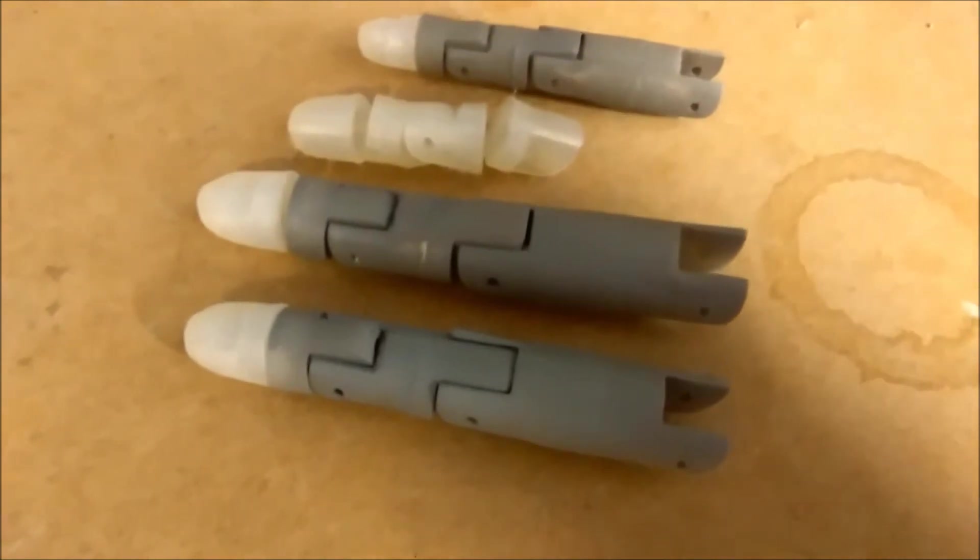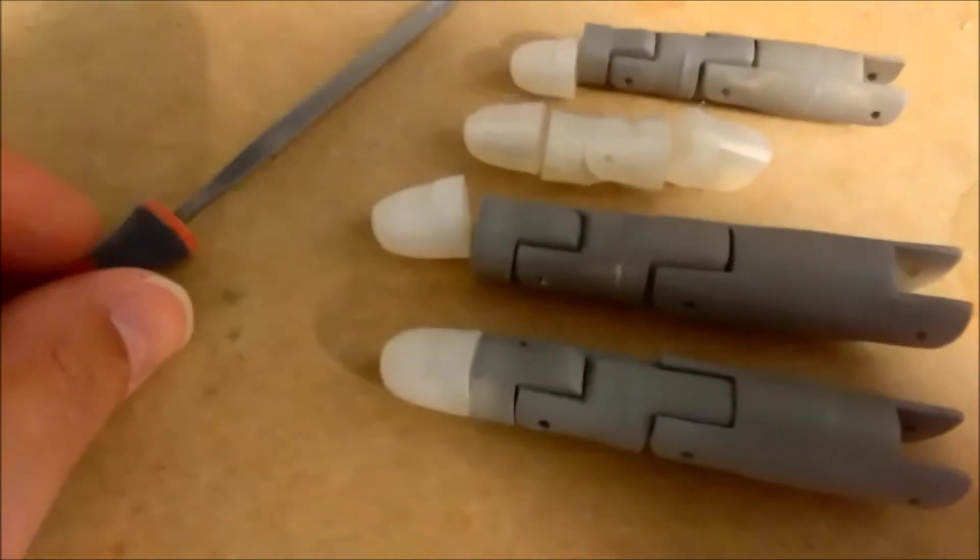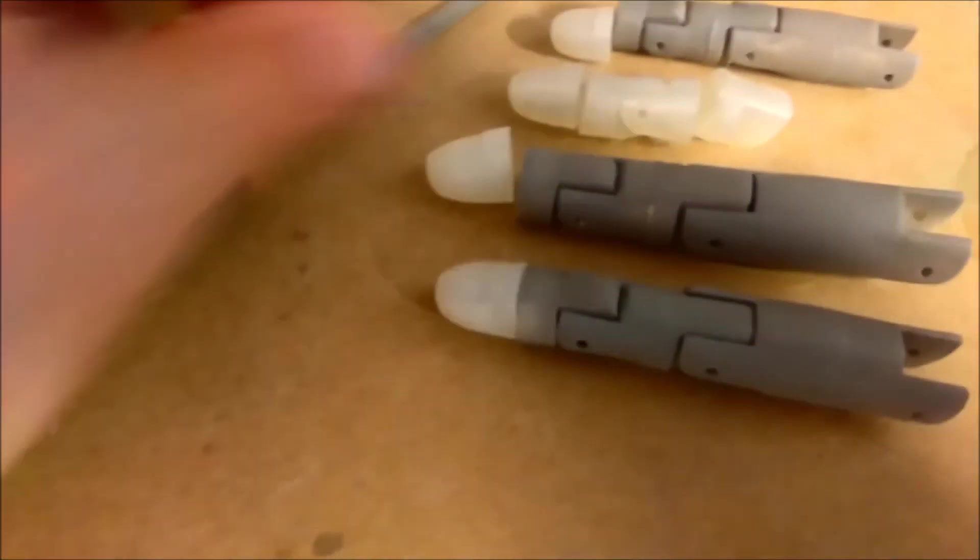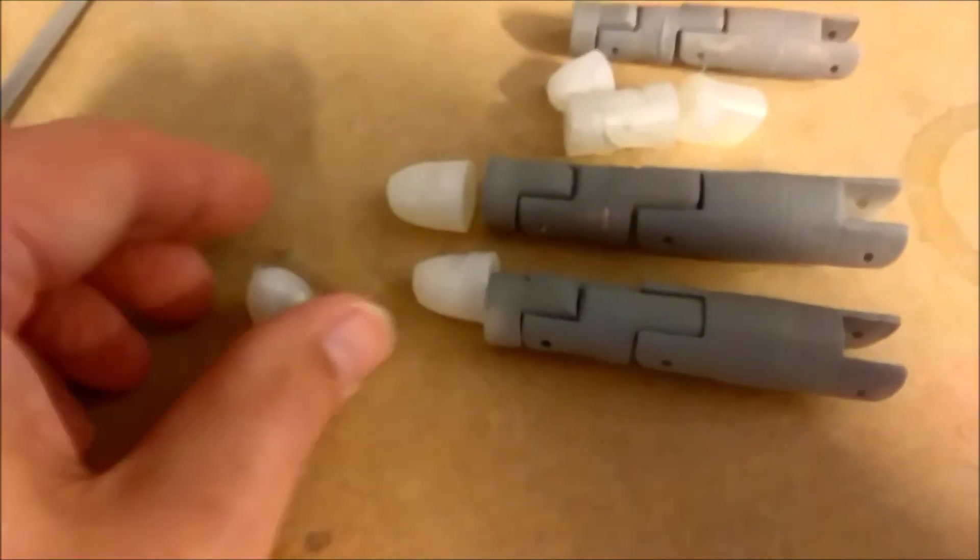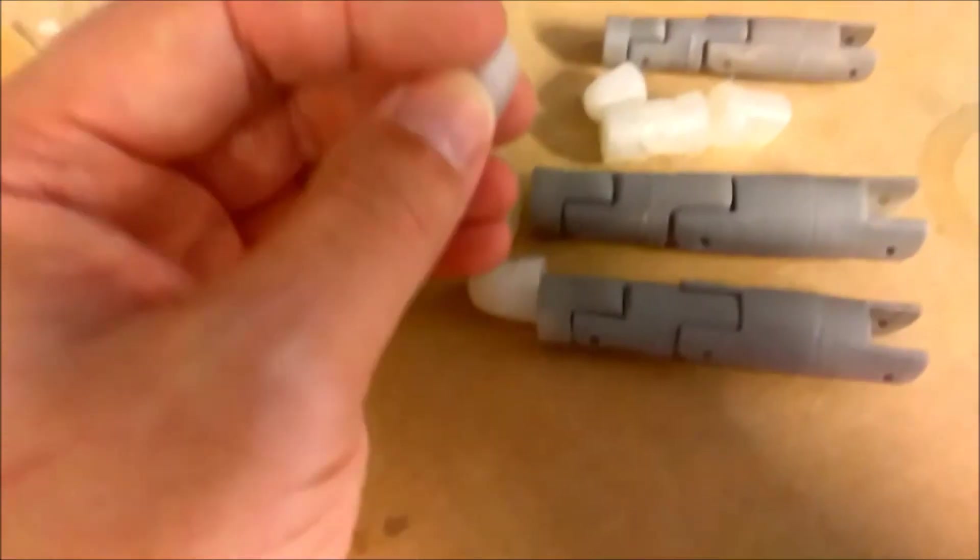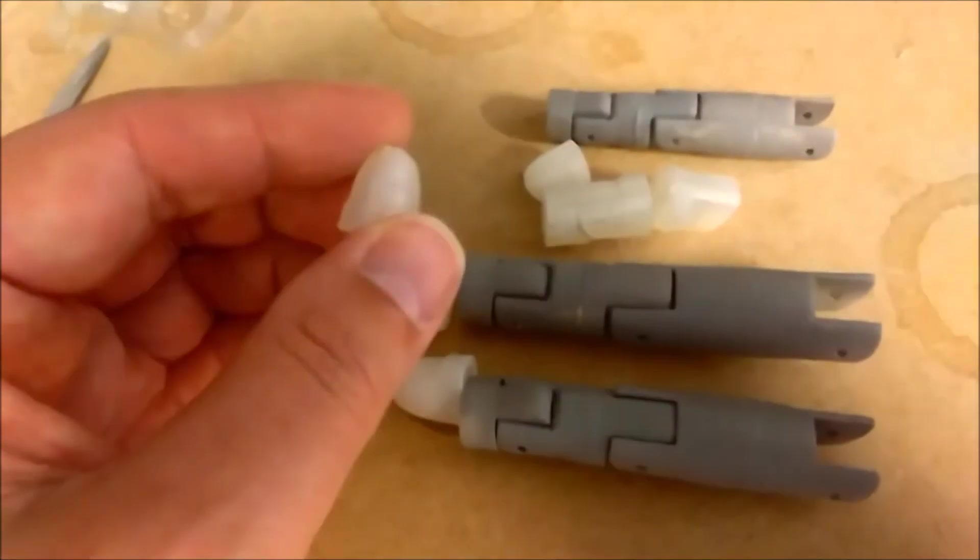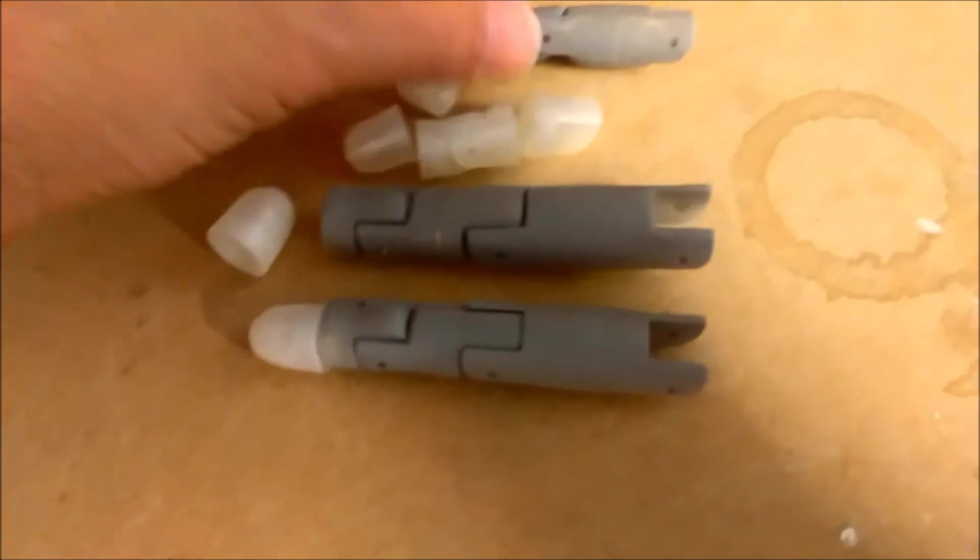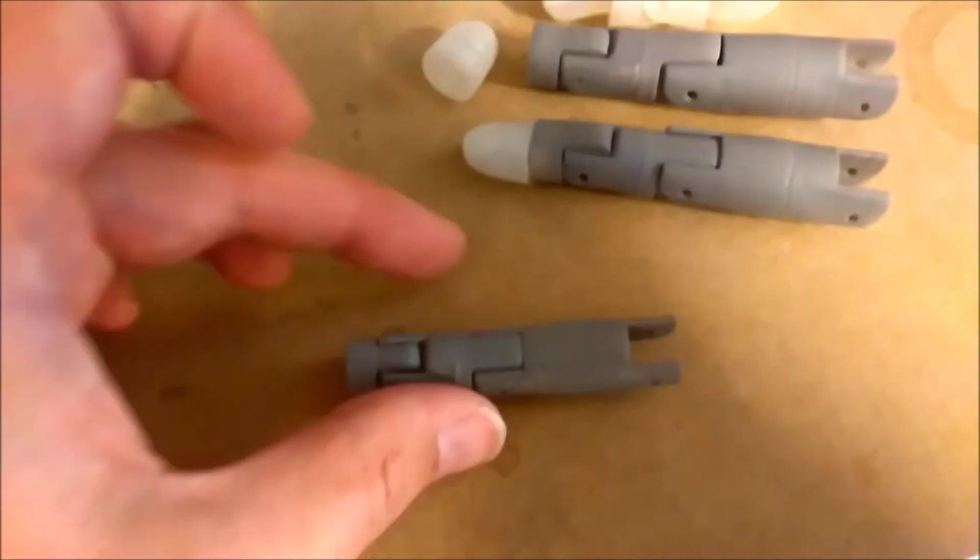These are the fingers at various different stages. When they first come off the printer I give them a quick file to smooth off the layers. Then I sand them with a medium grit sandpaper. And then I sand them again with wet and dry paper. I then prime them with a high build primer which again helps to fill the layers in. And then finally they will get painted white.